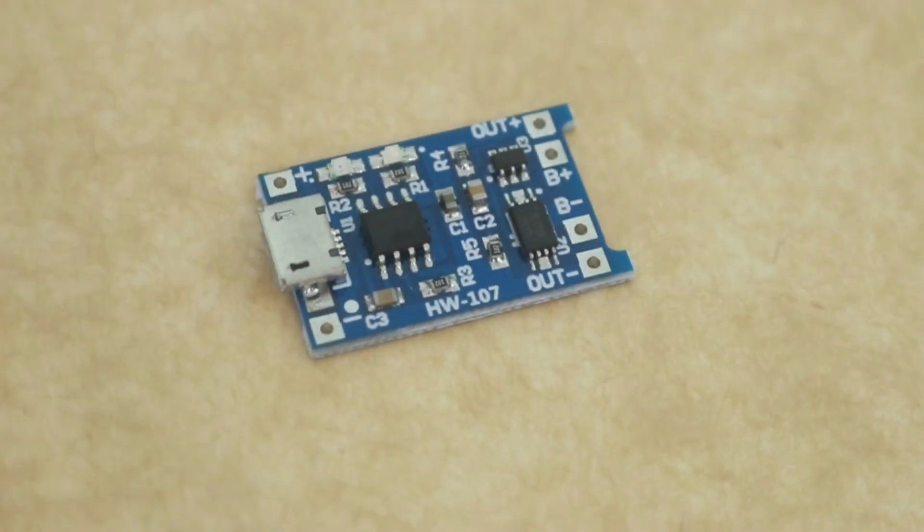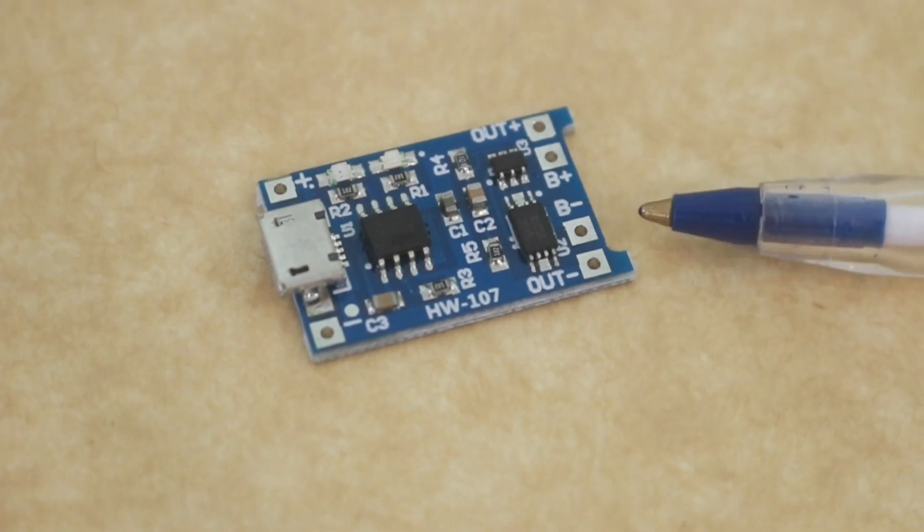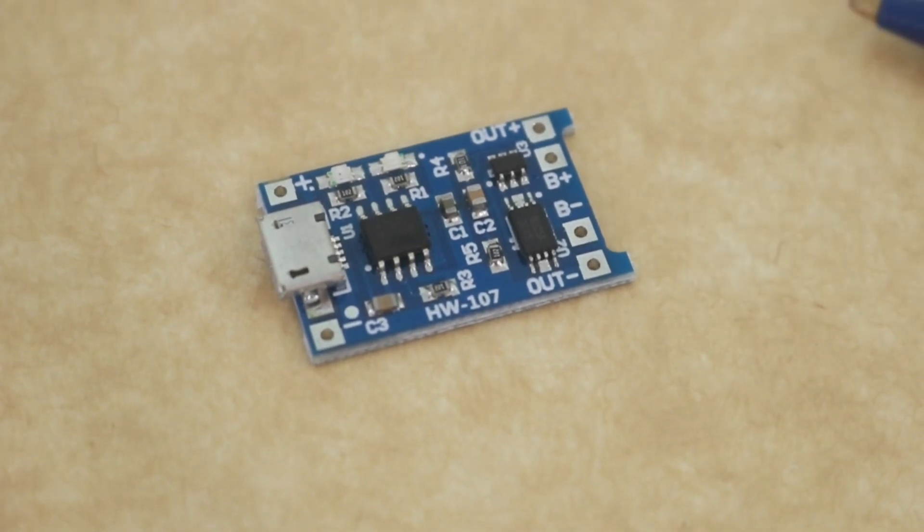The module will handle the charge of the battery first with constant current and at the end of the charge with constant voltage. It will also protect your battery from overcharge and over discharge.